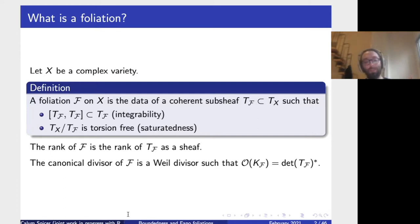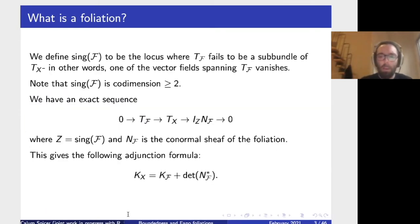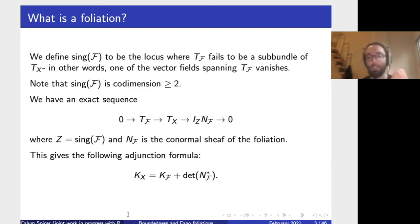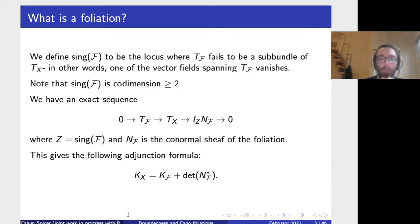When we have the trivial foliation, so TF equal to TX, this just recovers the usual definition. The singular locus of the foliation is just the locus where the tangent sheaf fails to be a sub-bundle of TX. Maybe this definition is really only valid when X is a smooth variety, but it's not such a big cheat. If we think of the tangent sheaf of the foliation as being just a bunch of vector fields, the singular locus is just where one or some of these vector fields are vanishing. By the saturatedness condition, we know that the singular locus is always codimension at least two in our variety.